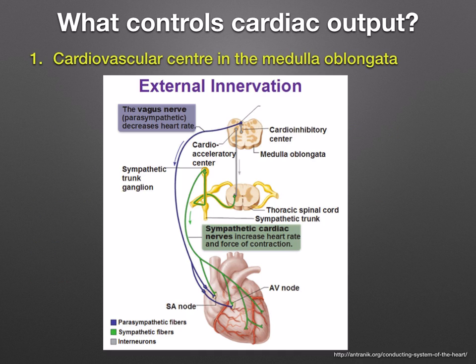Starting with the cardiovascular center and the medulla oblongata — this is involved in the control of the cardiovascular system via the vagus, also called the parasympathetic nerve, and the sympathetic nerve. Have a look at this diagram as we go along. The vagus nerve decreases the heart rate by going directly to the sinoatrial node and the atrioventricular node. The sympathetic nerves increase the heart rate and the force of contraction, also increasing the stroke volume. These nerves can also stimulate the adrenal glands to produce noradrenaline, which will also increase the heart rate.